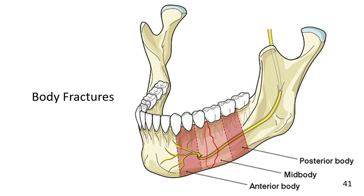Body fractures are fractures between the mandibular canine and the line between the second and third molar. They are further divided into anterior body — the fracture area along the canine and first premolar — mid body along the second premolar and first molar, and posterior body along the second molar.